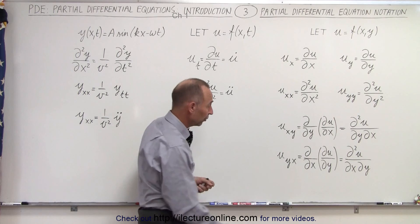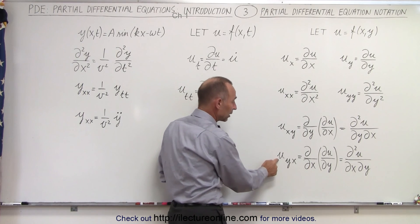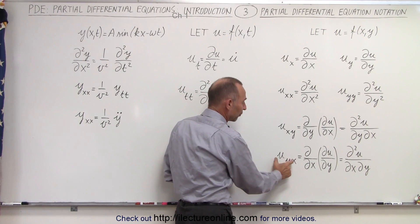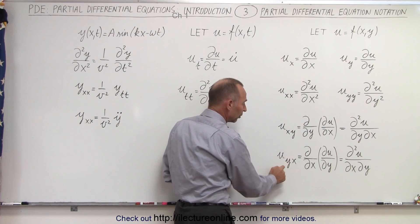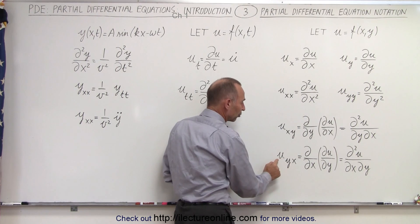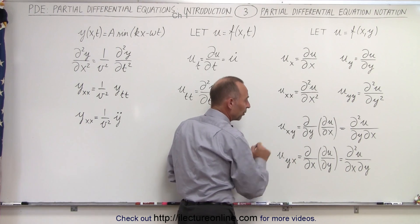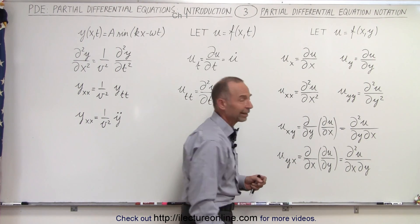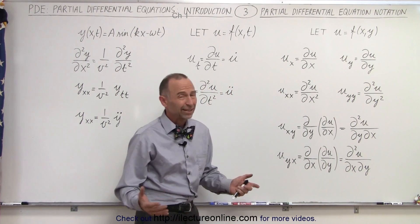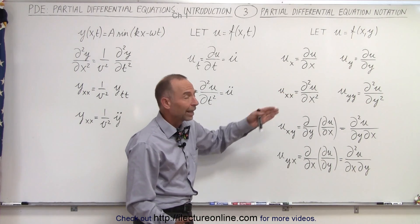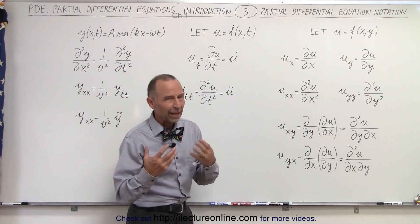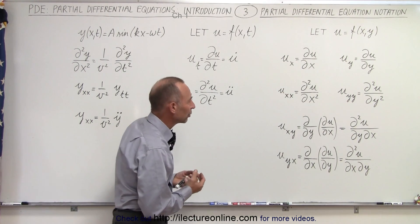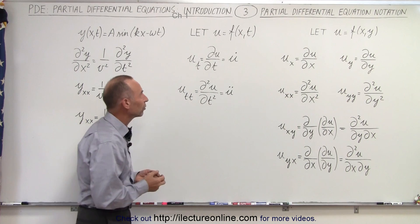And in reverse, for u sub yx, you take the partial derivative with respect to y first, before taking that result and taking the partial derivative with respect to x. You can clearly see that the subscript notation is a lot easier to write, but sometimes it loses a bit of clarity when you look at the equations.